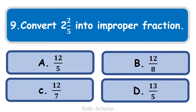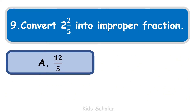Next question is: convert 2 and 2 by 5 into an improper fraction. When you convert this mixed fraction, you get 2 times 5 equals 10, and 10 plus 2 equals 12, giving 12 by 5. So the correct answer is A, that is 12 by 5.